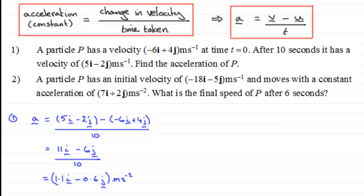Now in number two, we'll just section that off. What we've got here is a particle P has an initial velocity of (-18i - 5j) meters per second and moves with a constant acceleration of (7i + 2j) meters per second per second, and we've got to find out what is the final speed of P after 6 seconds.